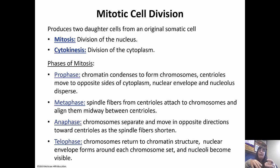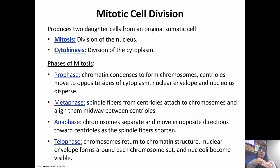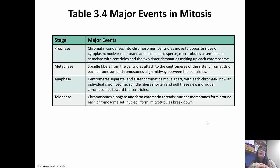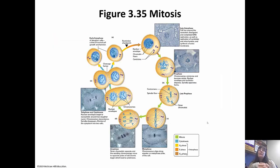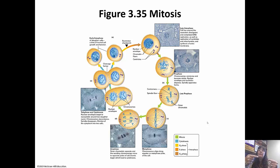In telophase, the chromosomes return to chromatin — it's basically the reverse of prophase. The nuclear envelope reforms, nucleoli become visible, and chromosomes go back to chromatin. The key feature of telophase is a cleavage furrow forming in the middle, pinching the cell into two. To summarize the phases: in prophase, chromosomes become visible; in metaphase, they line up in the middle; in anaphase, they look like little Vs separating; in telophase, look for the cleavage furrow pinching the cells in half — and you end up with two daughter cells.